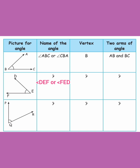Now we have another example: D, E, F. If you have the same thing, you can say F, E, D. The vertex is E. The two arms of the angle are D, E and E, F. Similarly, for angle P, Q, R, you can say angle R, Q, P. The vertex is Q, and the two arms are Q, R and P, Q.